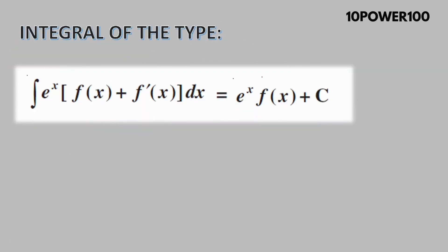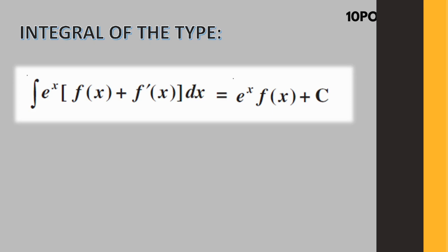Next one: integral of the type integration of e^x [f(x) + f'(x)]. Recently, they're asking more questions based on this. There are around 10 to 15 questions based on this. The final outcome for this question is e^x f(x) plus C. This is the final end product, so I want you to go through this concept very well. Even if you go through the previous year questions, you will get an idea how to solve it.